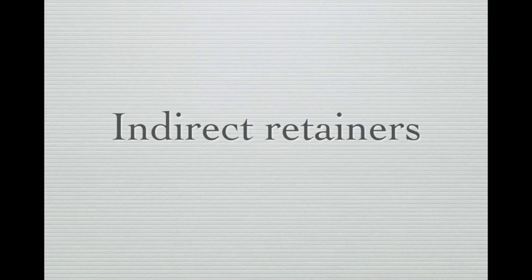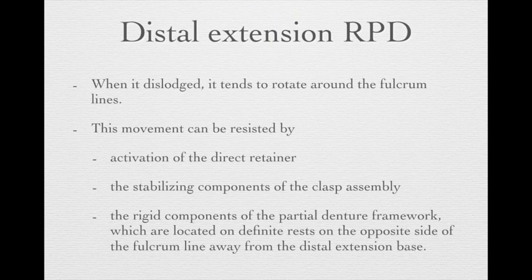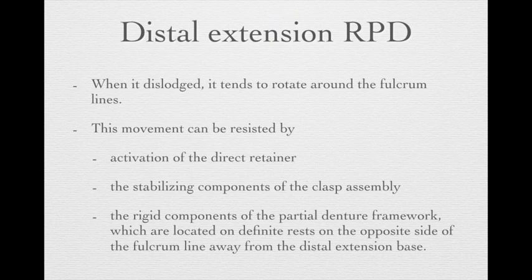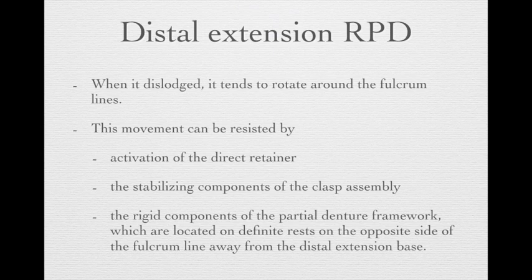Now let's talk about indirect retainers. We need indirect retainers when we have a distal extension RPD — Class I or Class II cases. When dislodgement occurs on a distal extension RPD, the denture has a tendency to rotate around the fulcrum line. These movements can be resisted by the direct retainer and the stabilizing components of the clasp assembly, and also by the rigid components of the framework located on the opposing side of the fulcrum line, away from the distal extension basis — which we call indirect retainers.